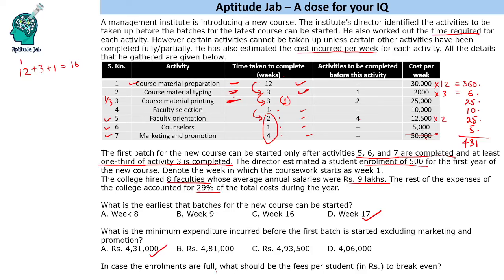In case the enrollments are full, what should be the fees per student to break even? Break even means zero loss — revenue equals cost. Looking at the total expense: it was 431,000, and we included only 1 week of material printing. If we have 2 weeks of material printing, we add another 50,000, and 50,000 times 4 is 200,000. That brings us 250,000, making the total 681,000.